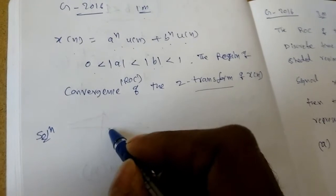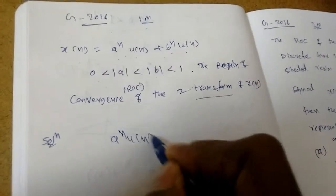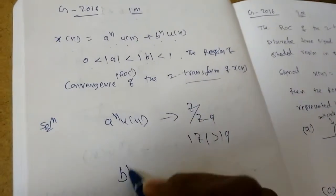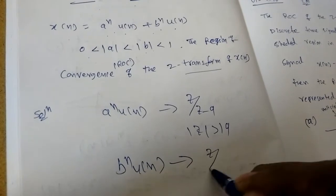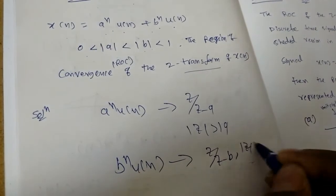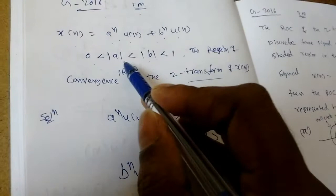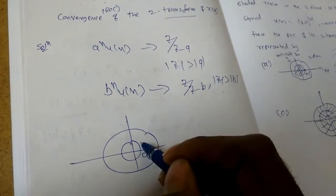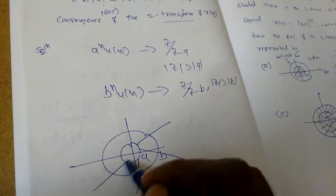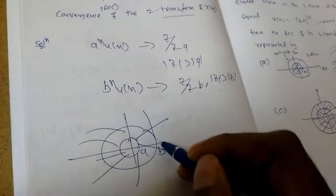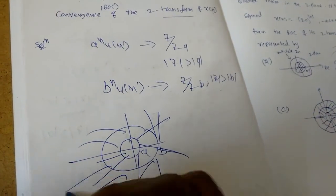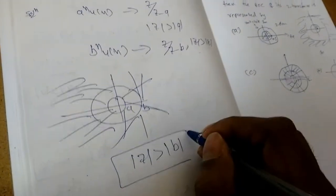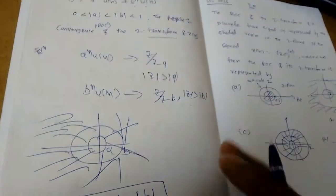It's very simple. For a power n times u of n, the ROC is mod z greater than mod a. For b power n times u of n, the ROC is mod z greater than mod b. Since b is greater than a, the common ROC is mod z greater than mod b. This is the answer for this one-mark question.